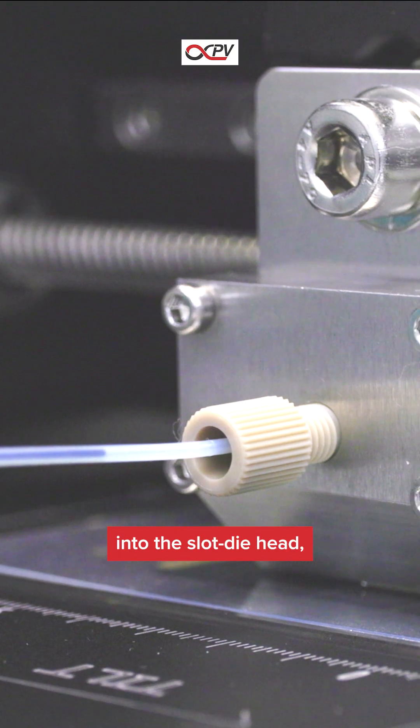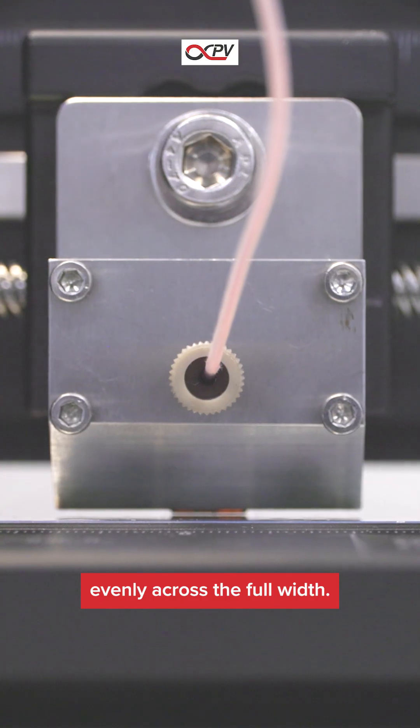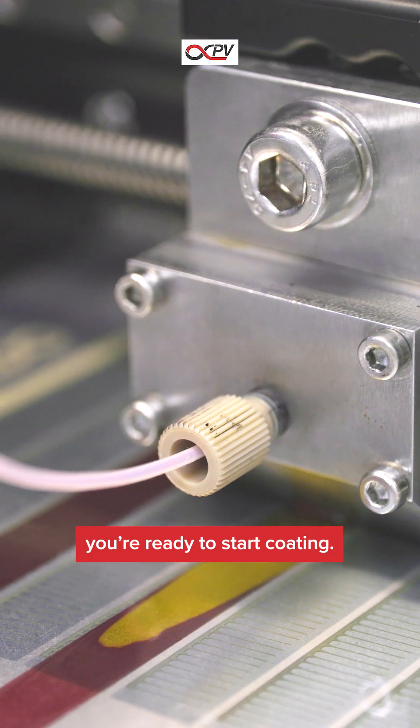The pump pushes the ink into the slot die head, where it spreads out evenly across the full width. Once the head is full, you're ready to start coating.